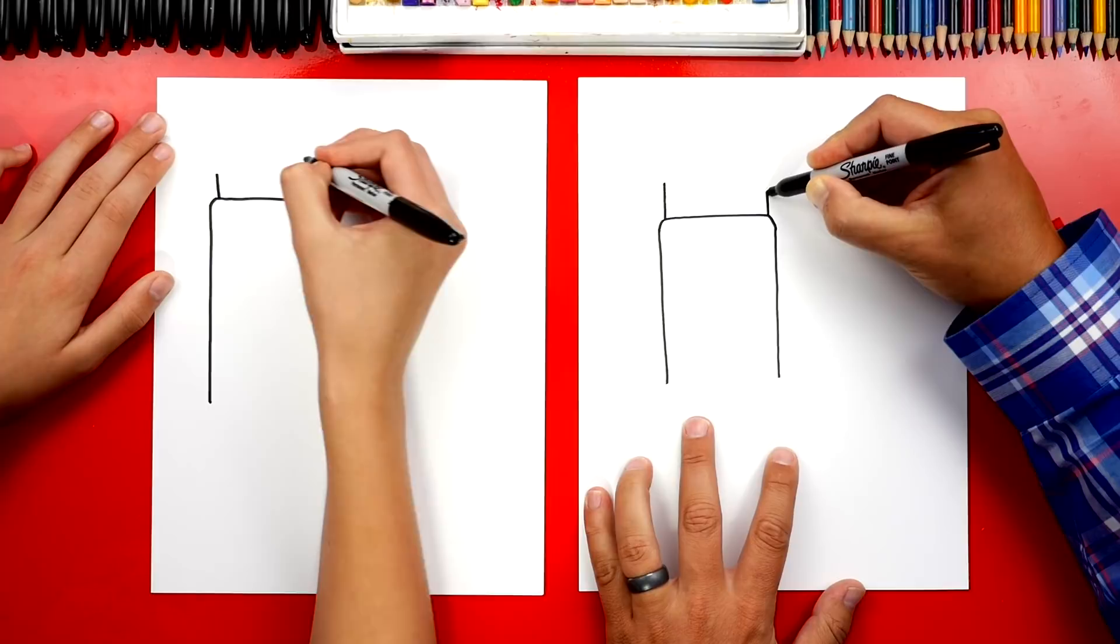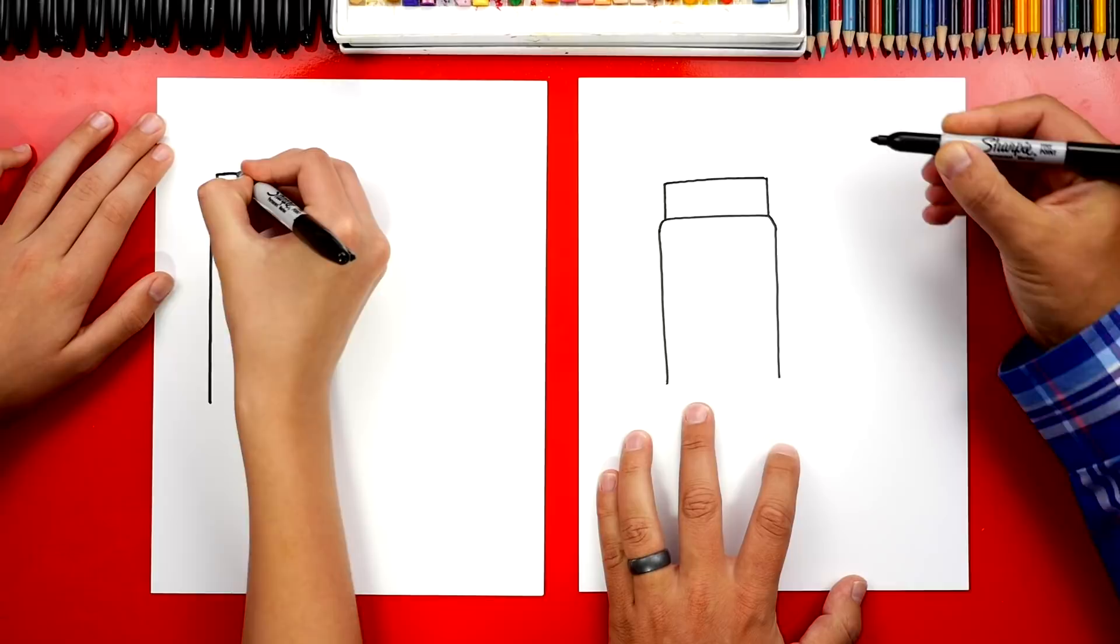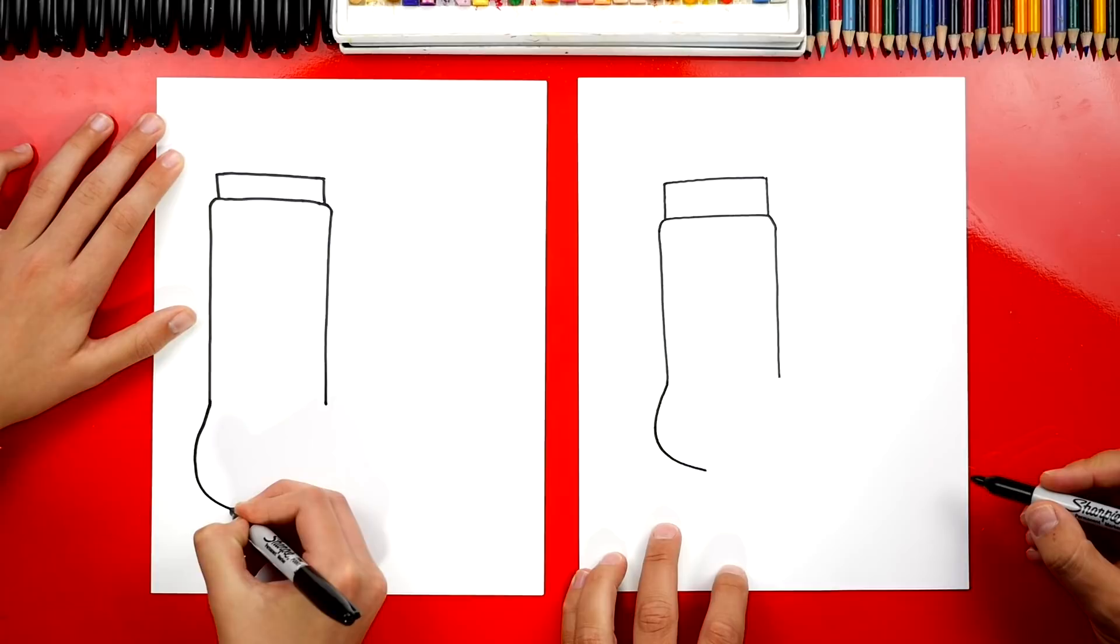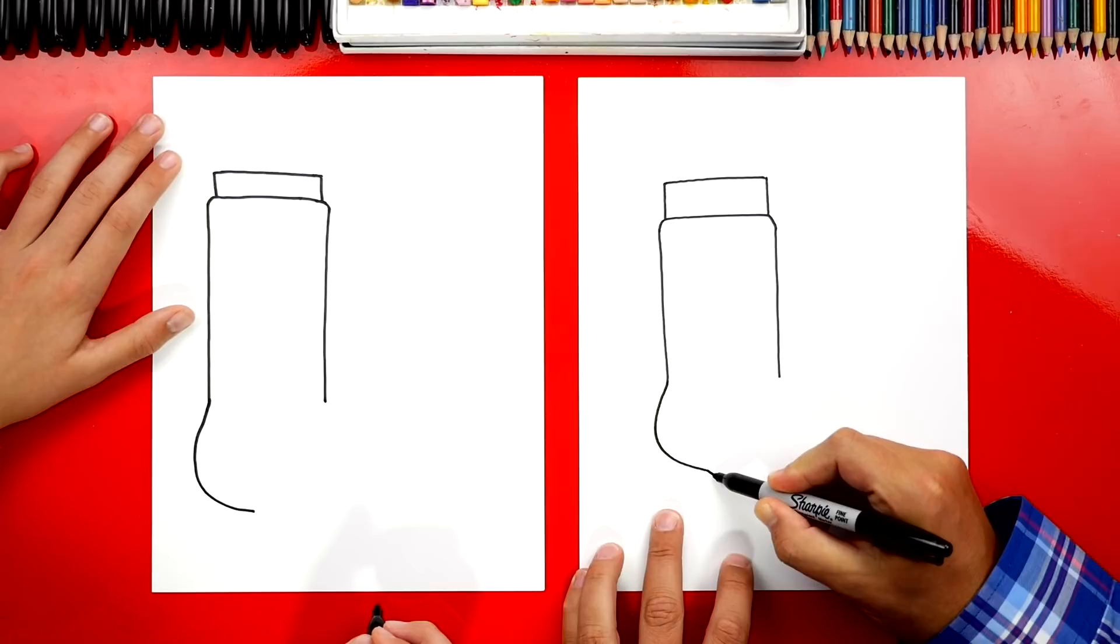Now let's draw the bottom of our sock. So we first could draw the heel. We're gonna draw a curve that comes out a little and then back in. Then we're gonna draw a big U shape that's diagonal. So we're gonna start right here at the heel. We're gonna draw the big U shape, comes around like this and then back up and connect.